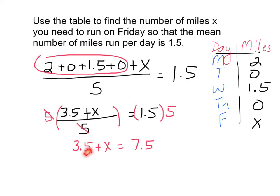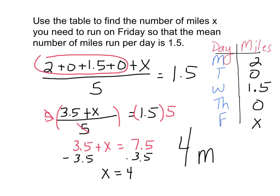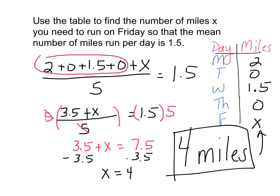The only thing left is to get rid of plus 3.5. The opposite of plus 3.5 is subtracting 3.5. So x equals 7.5 minus 3.5, which gives 4. The question asks how many miles to run — the answer is 4 miles on Friday.